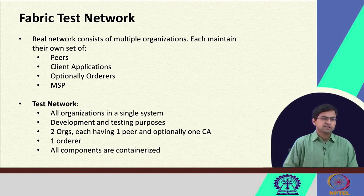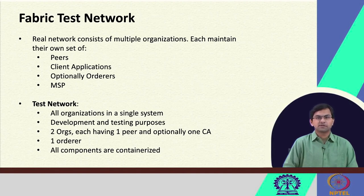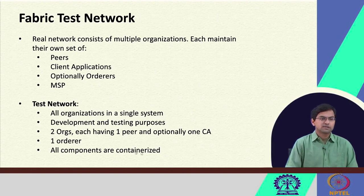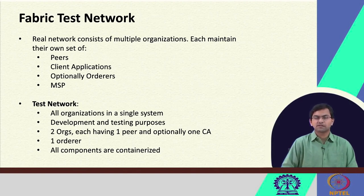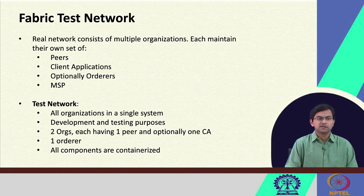This particular setup is very useful for testing and development purposes. If you want to develop a Fabric application or a Fabric chain code, you can just start a test network, deploy your chain codes in that network, run your applications, and see how it works. The test network default settings include two organizations, each having one peer and optionally one certificate authority. CA is one implementation of the MSP — it issues certificates and credentials to different participants within an organization. The test network will have only one orderer, and all components — the peers, CAs, and orderers — will be containerized.